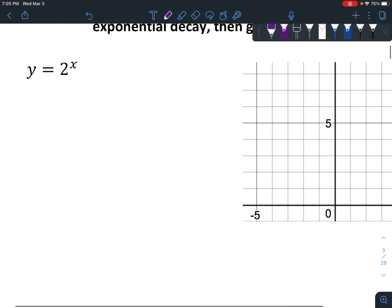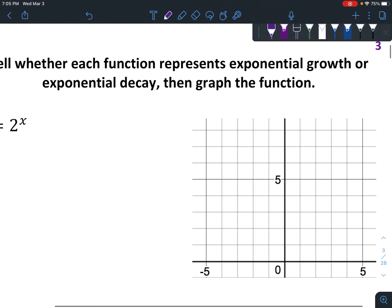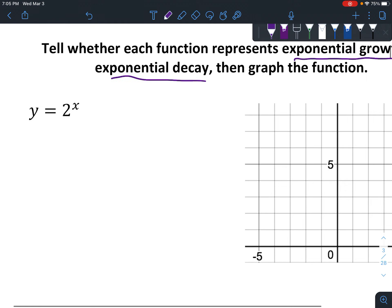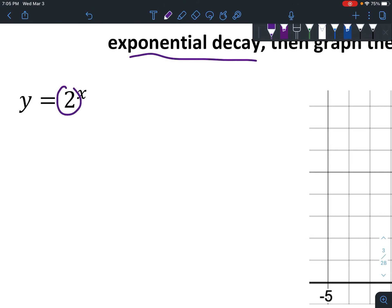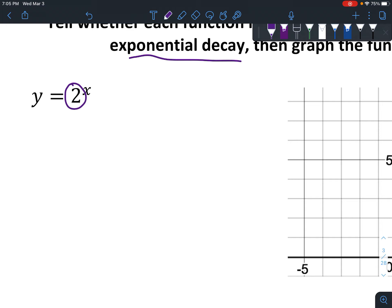So let's just graph a couple of these, and that will kind of give you an idea of how it works. So it says, tell whether each function represents exponential growth or exponential decay. So how you tell is you look at what's being raised to the power. And if it's greater than 1, it represents growth. If it is between 0 and 1, then it represents decay. So this is obviously bigger than 1, right? So this is going to be exponential growth.